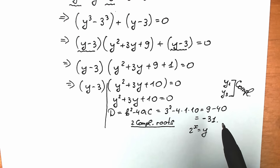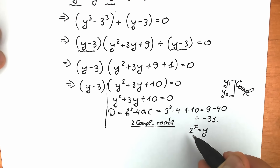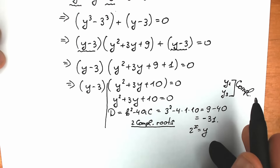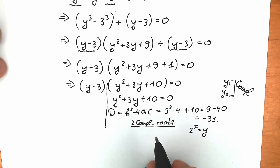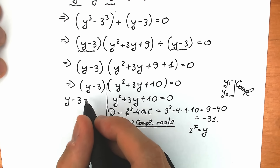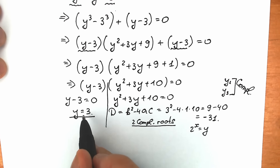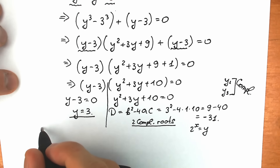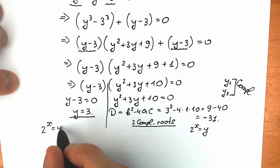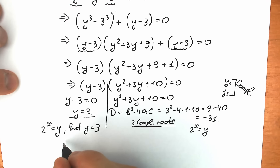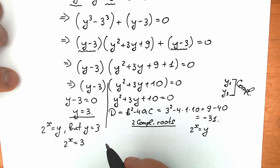If you want to solve this on your exam, I hope the information about complex roots is enough for you — y second and y third are complex roots. If your teacher requires it, you can plug these complex values into 2 to the x equals y second, and 2 to the x equals y third. On the left side we have y minus 3 equal to zero, so y equals 3. This is much easier to work with — 2 to the x equals 3.